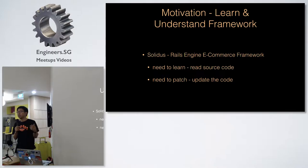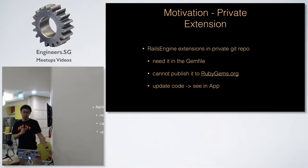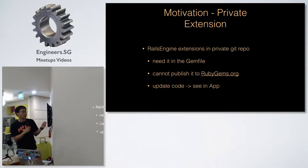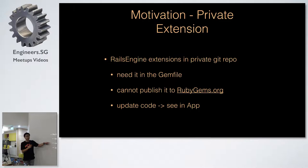That's motivation number one. Motivation number two is that we have some private extensions inside our company, so we also need to put the private repo in the Gemfile, and the private repo is not published to remote. Actually, the first two points are simple — you can just put the gem name and then a git repo. That's all, simple like that.